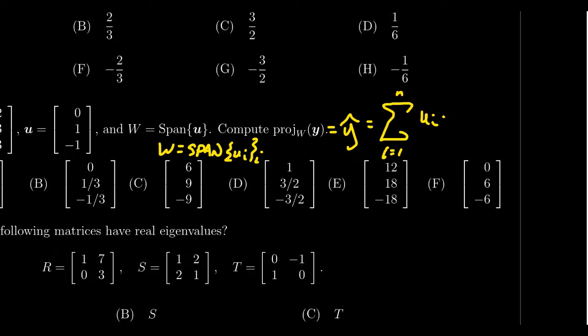Now in this example, in this question I should say, we only have one vector u right here that spans W, and it's a non-zero vector. It does give us an orthogonal basis for W. So we're ready to go.